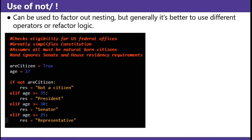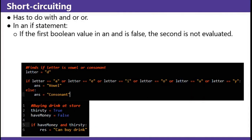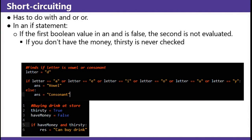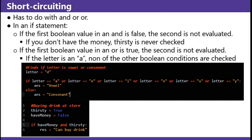Use of NOT or the BANG operator can be used to factor out nesting, but generally it's better to use different operators or refactor logic. This is the eligibility example again: if you're not a citizen, you're not a citizen. Otherwise, you are a citizen, so we can ask you the age questions. Short-circuiting has to do with AND or OR. In an if statement, if the first Boolean value in an AND is false, the second is not evaluated. In that bottom example, if you don't have the money, 'thirsty' is never checked. If the first Boolean value in an OR is true, the second is not evaluated. If the letter is an A in that top example, none of the other Boolean conditions are checked.